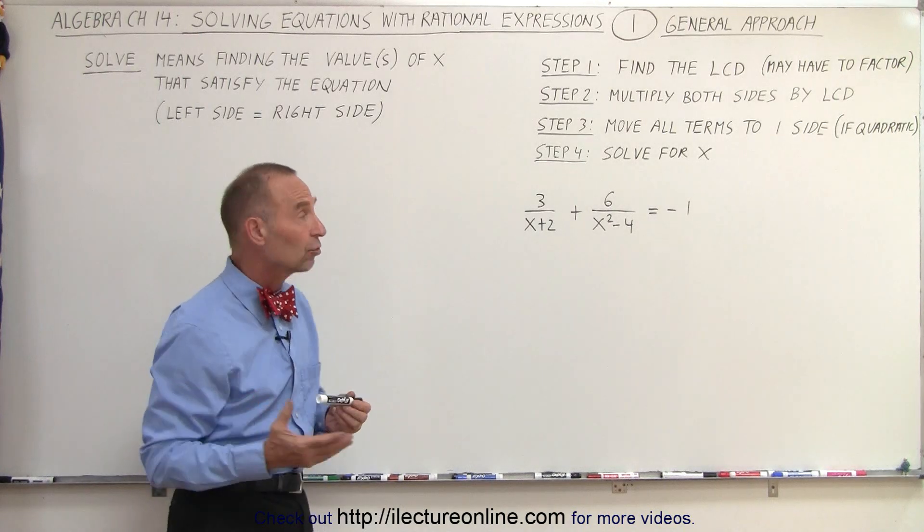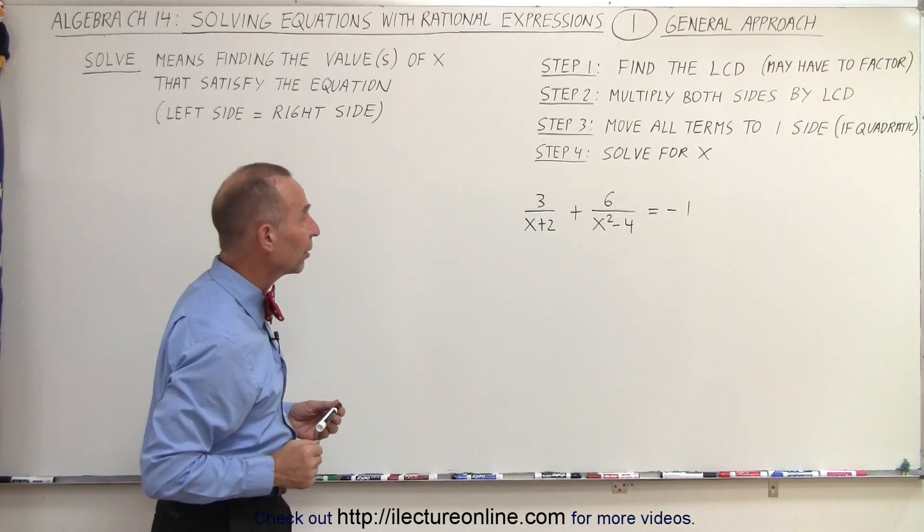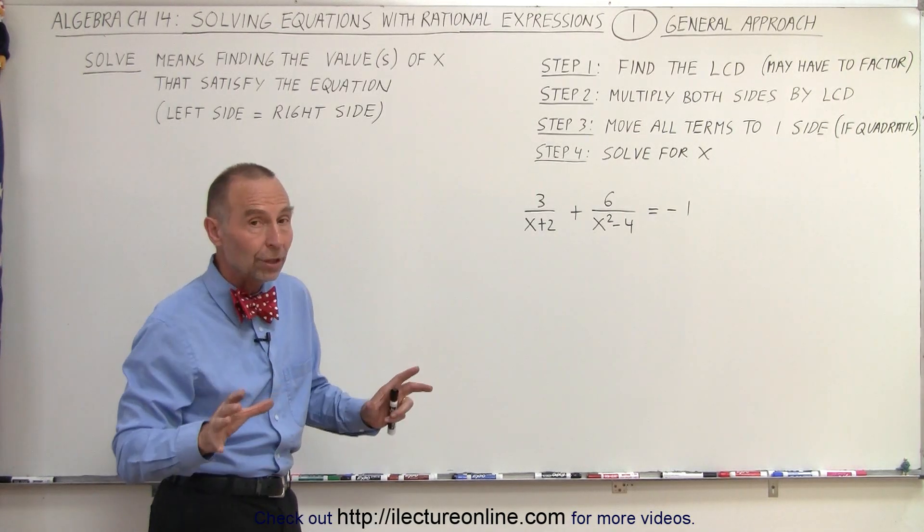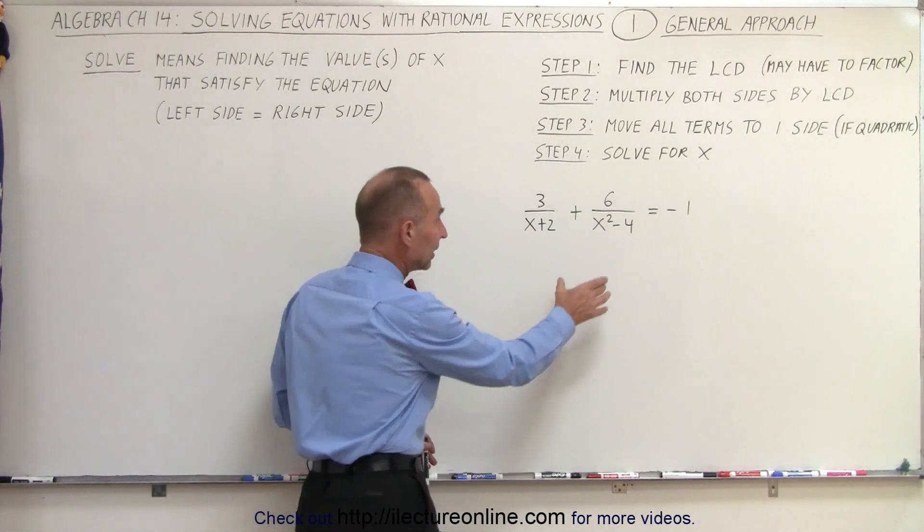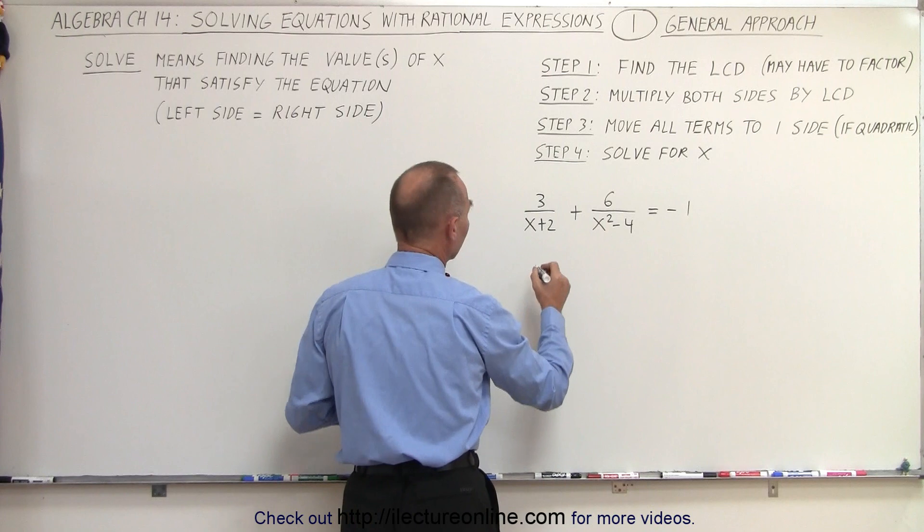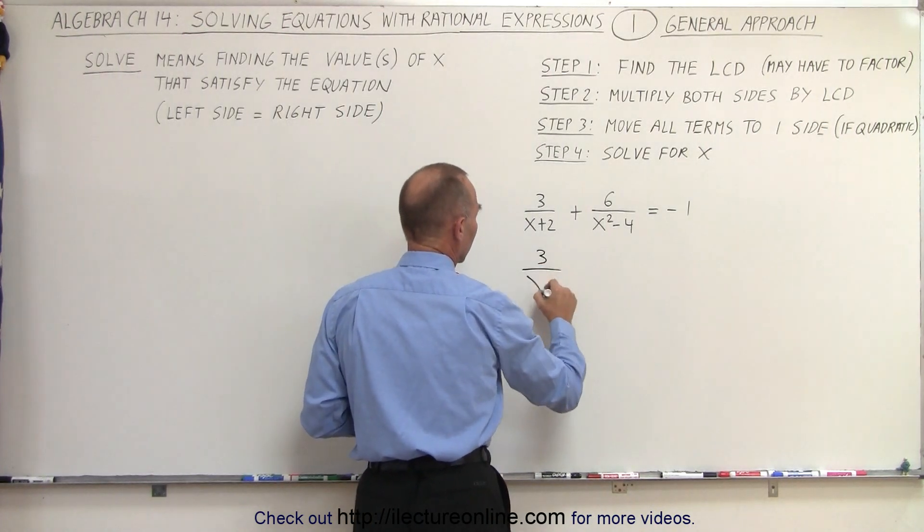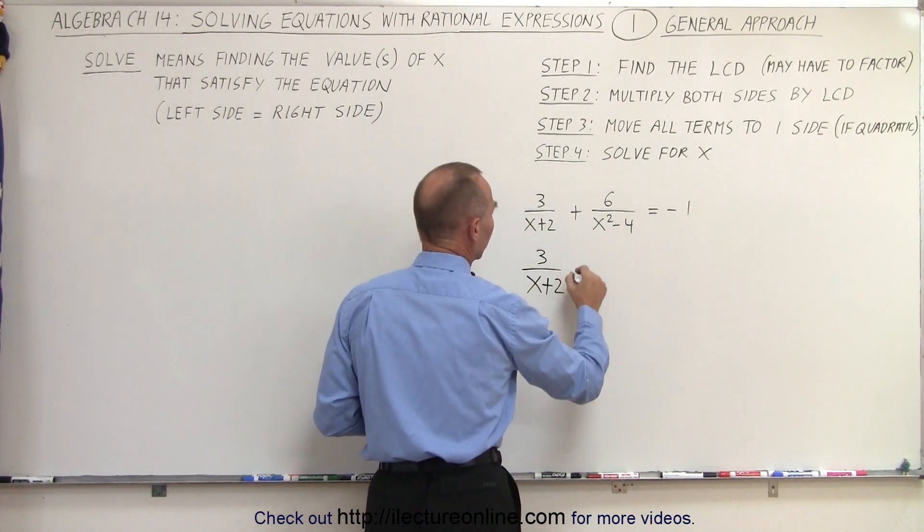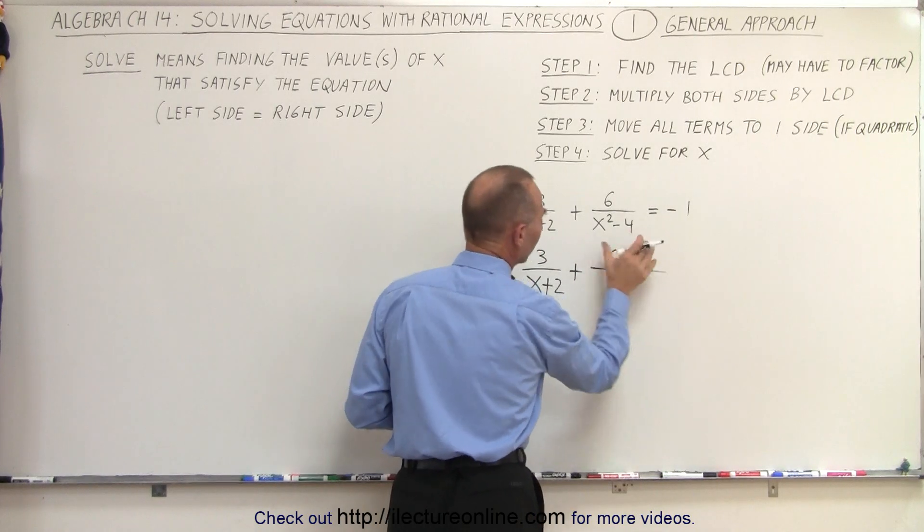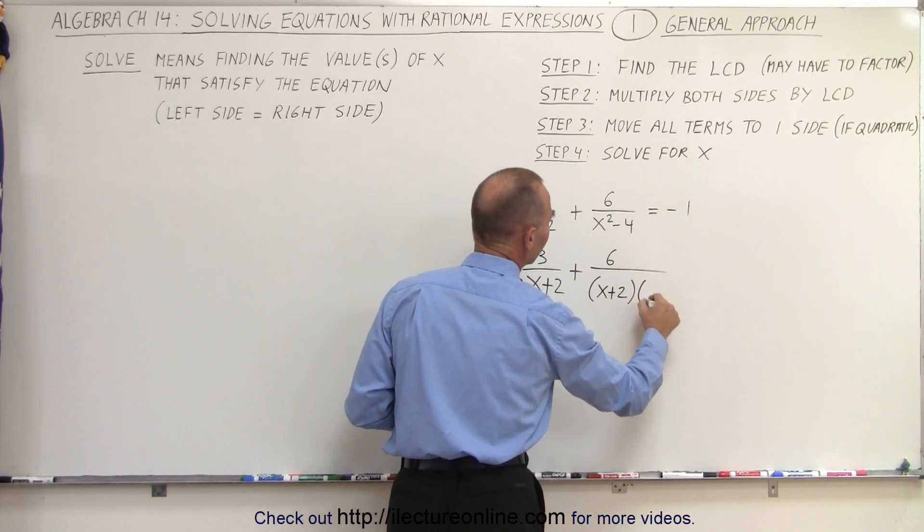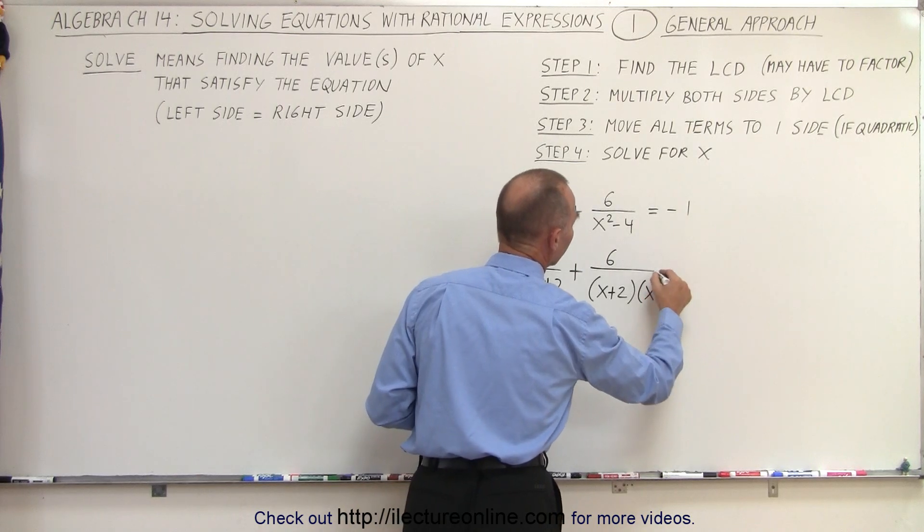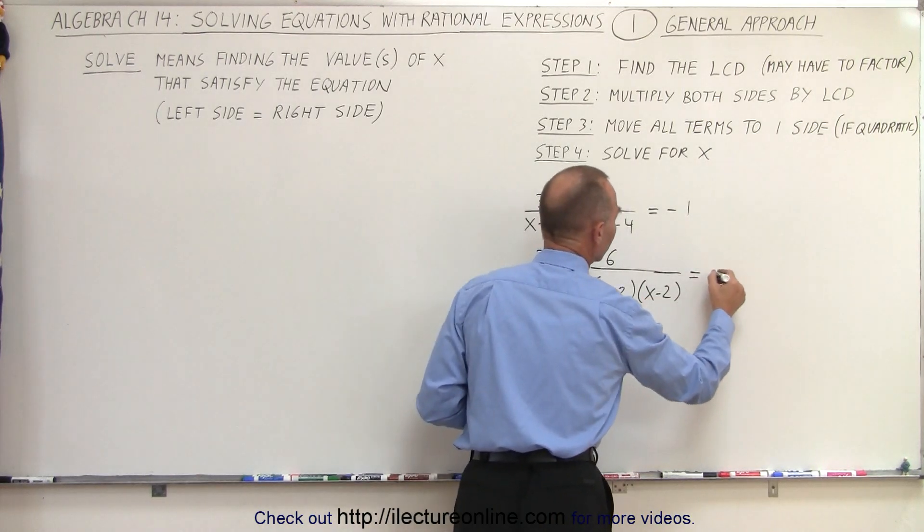All right, let's go ahead and follow that instruction. First, we need to find the lowest common denominator, and we're going to do that by factoring all denominators that need to be factored, like the x squared minus 4. So this can be written as 3 over x plus 2 plus 6 over, since that's the difference of squares, would be x plus 2 times x minus 2. And that's then set equal to minus 1.